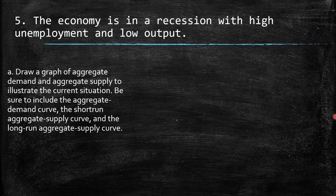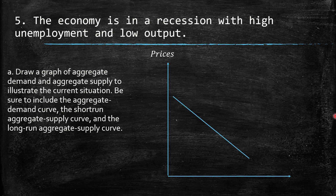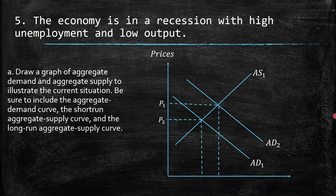Question 5: The economy is in a recession with high unemployment and low output. a. Draw a graph of aggregate demand and aggregate supply to illustrate the current situation, including the AD curve, the short-run AS curve, and the long-run AS curve. There is a decrease in aggregate demand compared to the long-run aggregate supply — a disequilibrium showing lower prices and lower quantity of output.